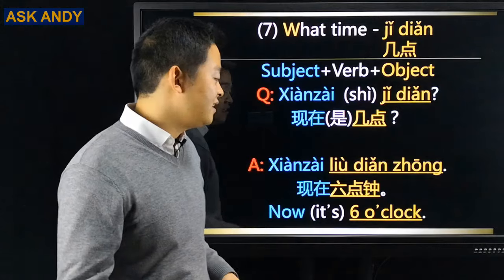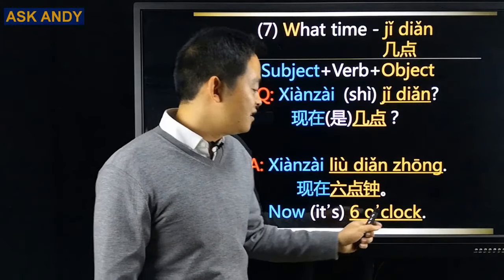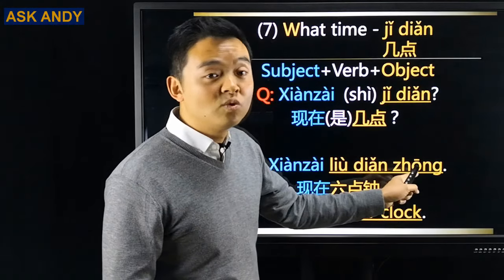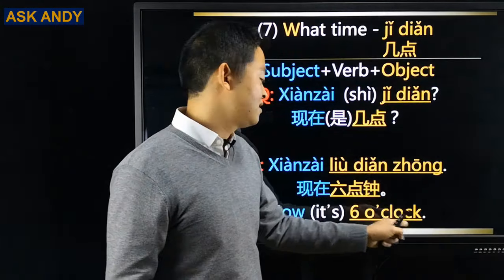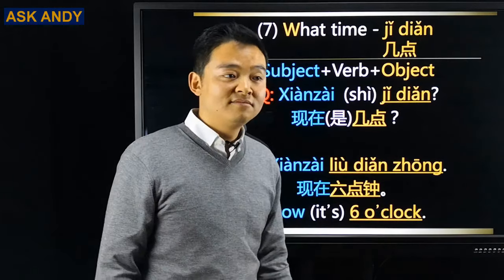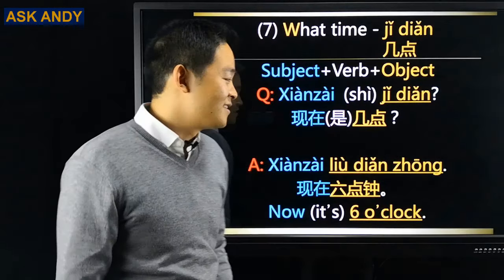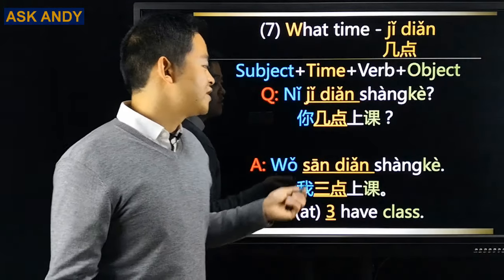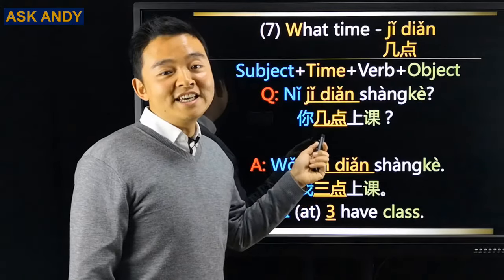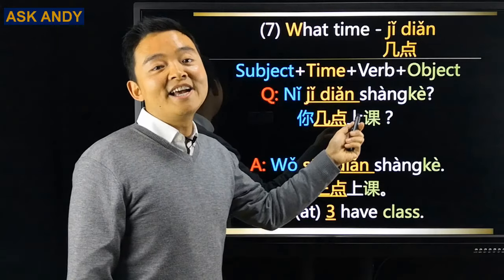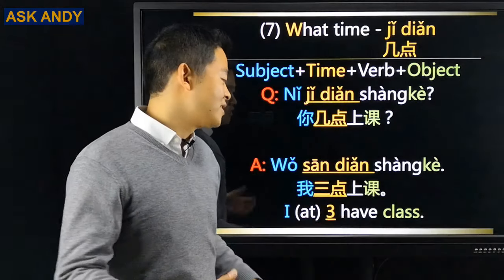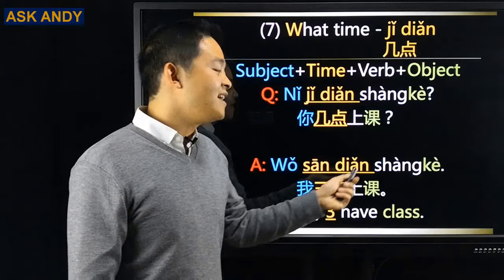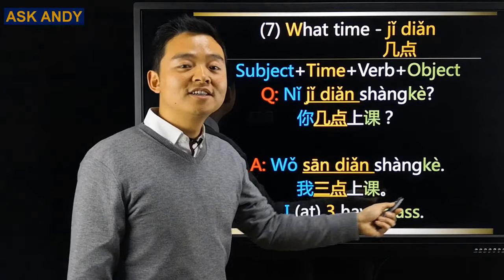A funny thing: in English we have 'o'clock,' in Chinese we have 钟 (zhōng), which also means clock — what a coincidence! 你几点上课? → 我三点上课 (I have class at three o'clock).